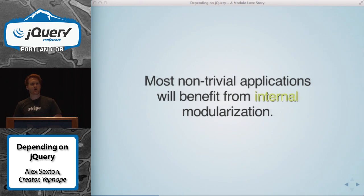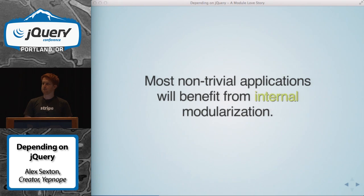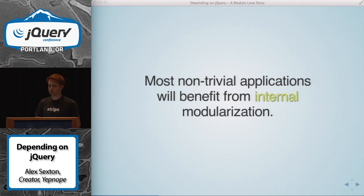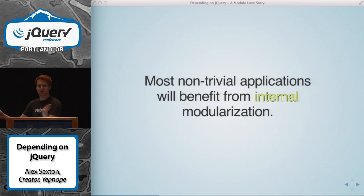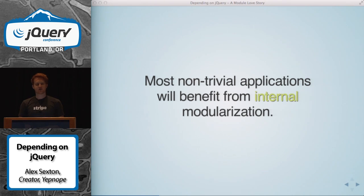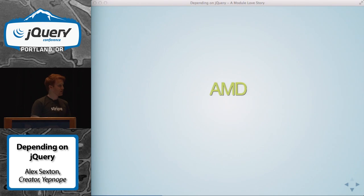Most non-trivial applications are where Yepnope could come in — like if you're writing a splash page, you could use it. But you're going to want to internally modularize. A lot of people think about modules and say, 'I'm pulling in these libraries as modules, and then my app is a module.' That's probably not good enough. jQuery is in this state right now — it's kind of just jQuery.js, and we're finally breaking it out into Ajax as a module and the DOM part as a module. That's why you can build those off now on the jQuery website. Internal modularization allows a lot of flexibility and a lot of code reuse.